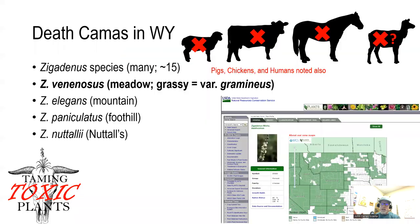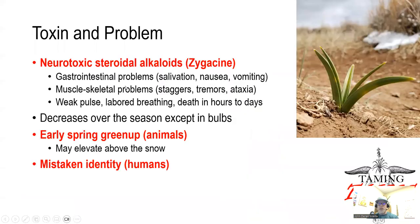Just remember that death camas can be a problem in all livestock species and potentially wildlife if they ingest it. In the state of Wyoming, every county in the state is suspected to have some species of death camas.